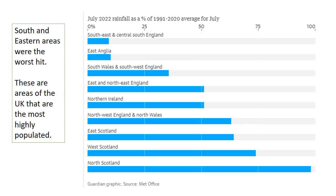From this graph, you can see clearly that south and eastern areas of the UK were the worst hit. Some areas like the southeast received barely 10% of average rainfall in July 2022. What's worse is these are the areas of the UK that are the most highly populated.